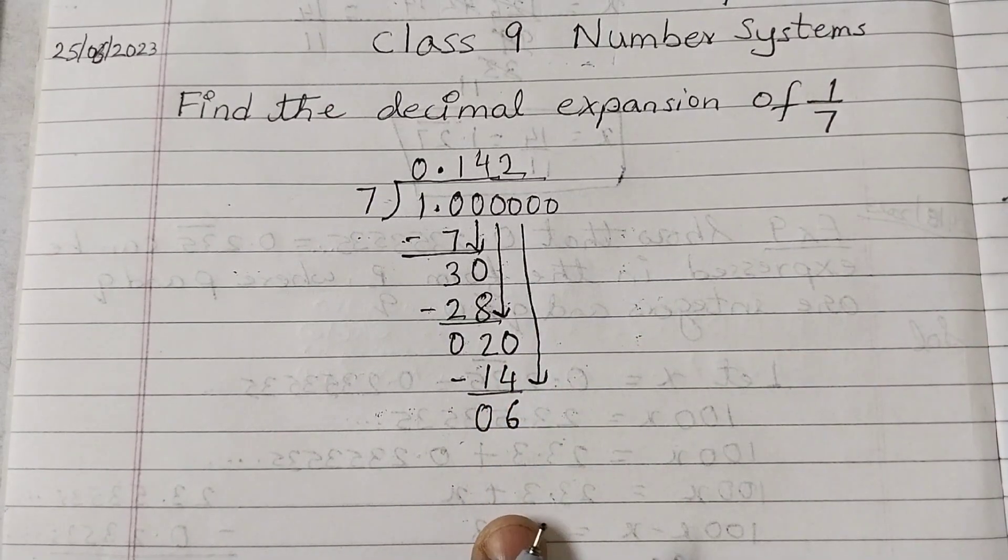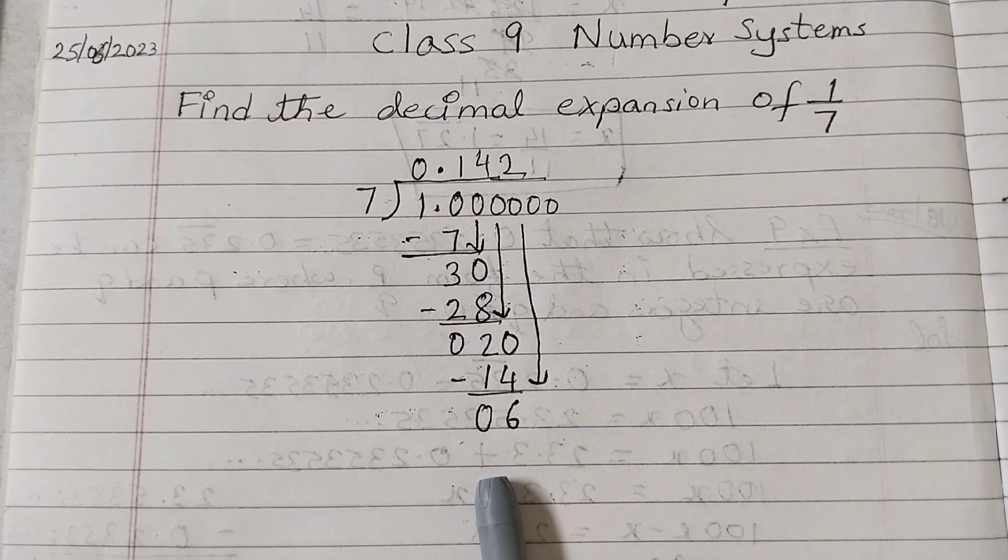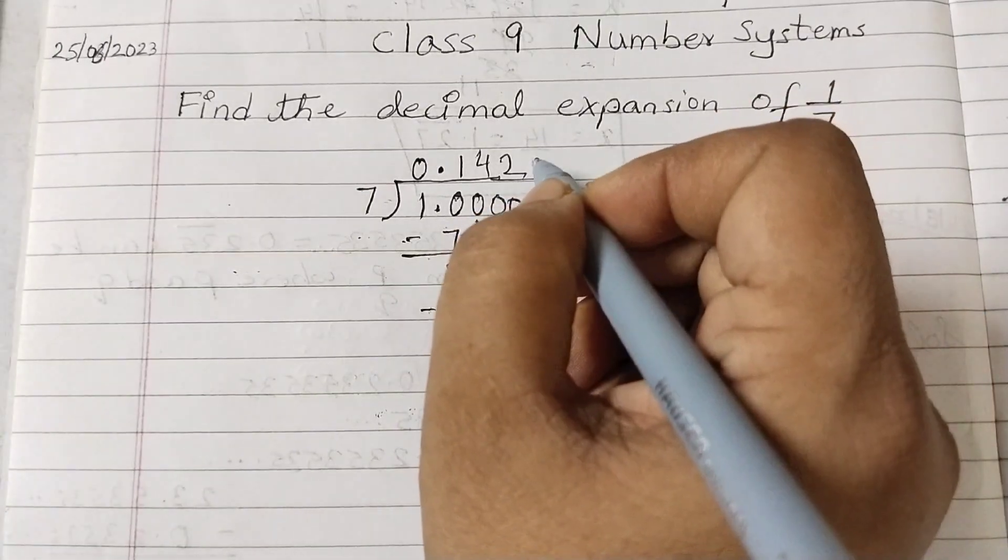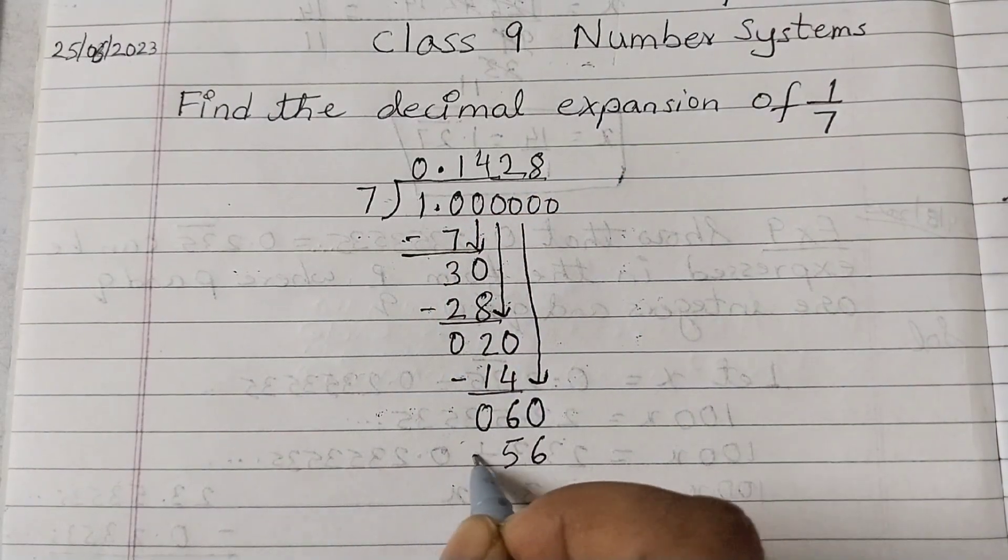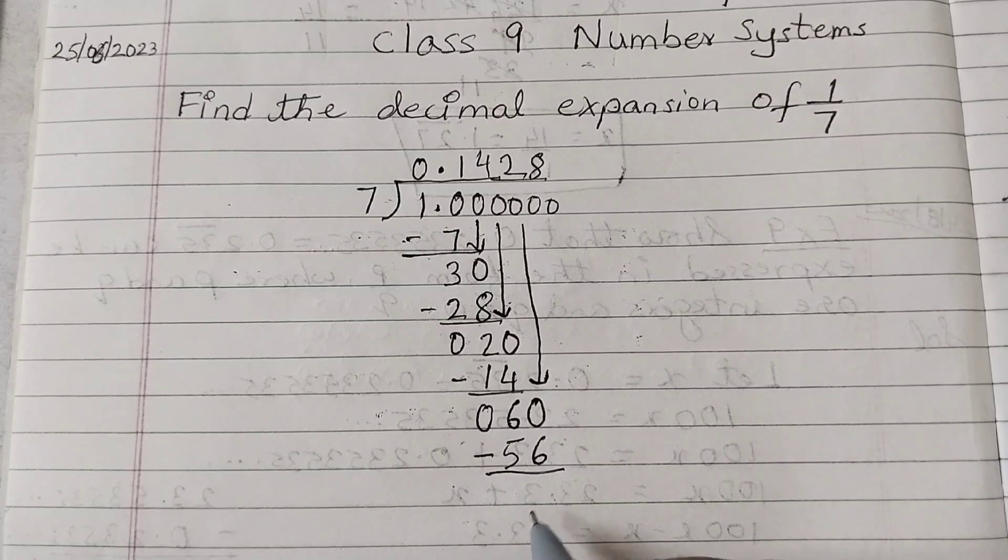We will go on dividing till we get a 0 or we see a pattern in the remainder. 7 into 8 is 56. 60 minus 56 is 4.